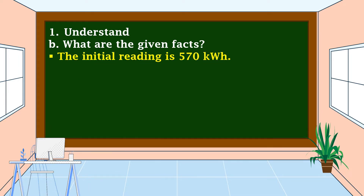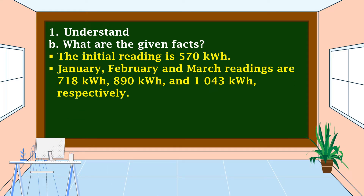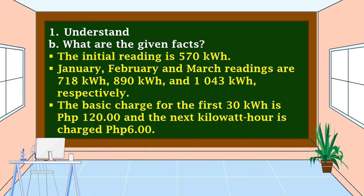We should also know the given facts. The initial reading is 570 kilowatt hours. The January, February, and March readings are 718 kWh, 890 kWh, and 1,043 kWh respectively. The basic charge for the first 30 kilowatt hours is 120 pesos, and each succeeding kilowatt hour is charged 6 pesos.